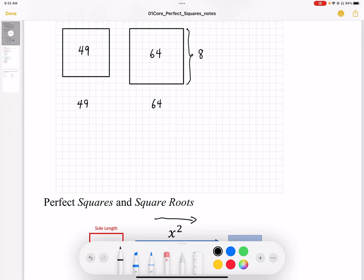There are also non-perfect squares. We don't necessarily have to make a square fit exactly in the grid, but if we do that, we're not going to get whole number side lengths. Those are called non-perfect squares.